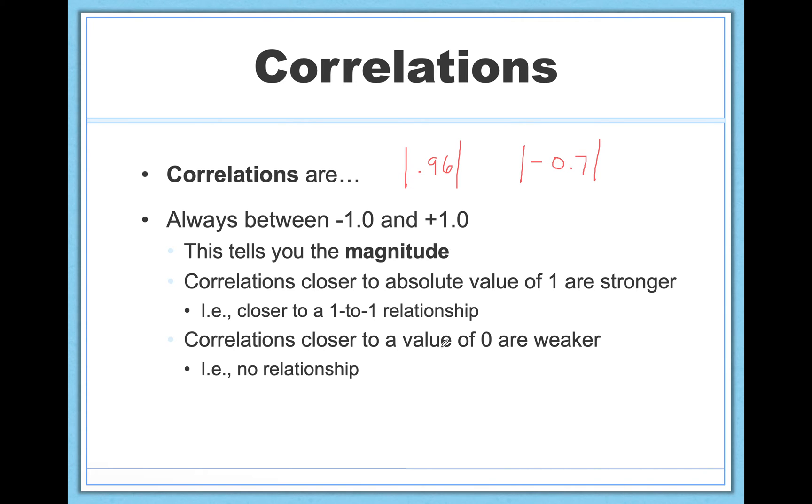If you find something in contrast closer to zero, like 0.1 or negative 0.09, something like that, then this is closer to what we would call a zero correlation, no relationship.